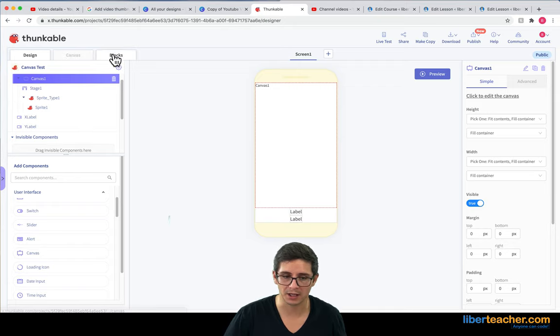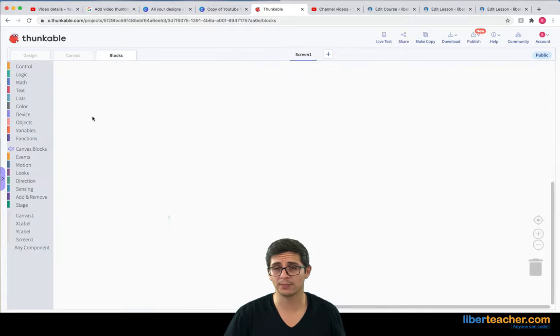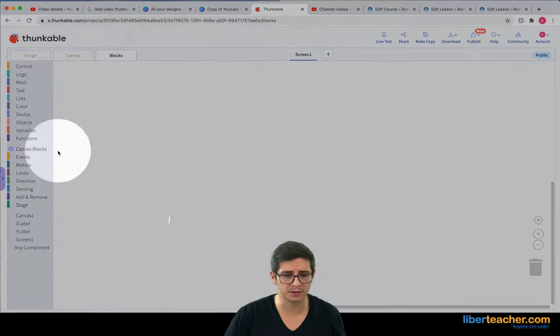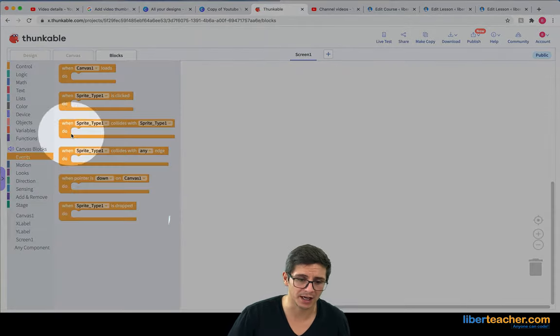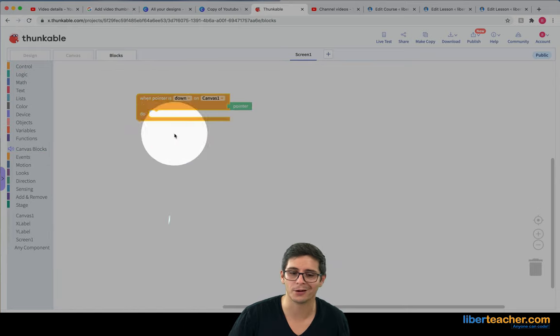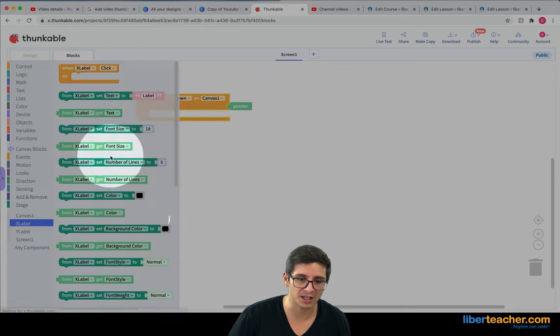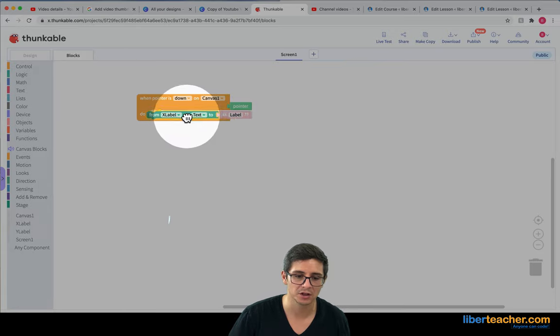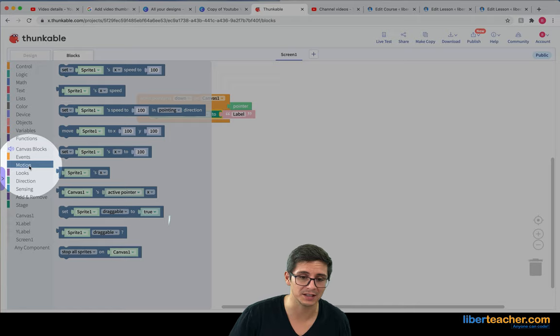Now I'm going to go ahead and go to my blocks, and the blocks are pretty simple. What I want to do is say, every time the pointer is down on the canvas, I want to change the xlabel text to be the active pointer, or where somebody is touching. So I can find that under motion and grab the active pointer, the canvas's active pointer.